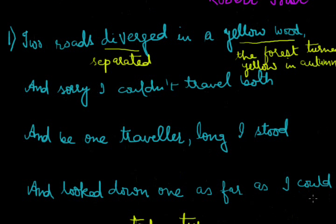Now see the meaning of this stanza. 'Two roads diverged in a yellow wood, and sorry I could not travel both.' The poet was standing at a junction in a yellow forest where two roads are separated in different directions. The poet feels sorry that, being the lonely traveller, he could not walk on both roads at the same time.